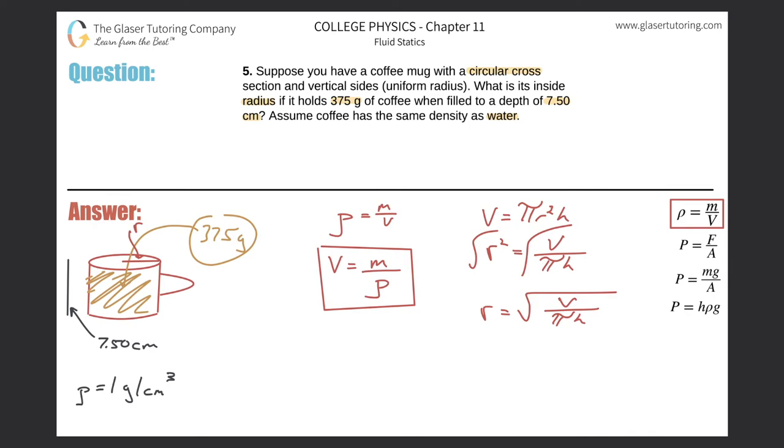So now all I'm going to do here is just simply plug in the mass divided by the density in for my volume. So now it's going to be mass divided by density times pi times H.